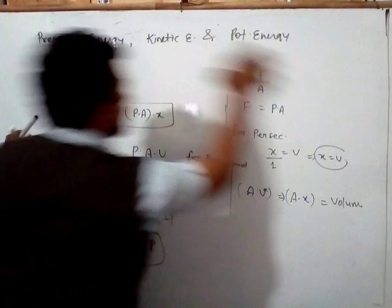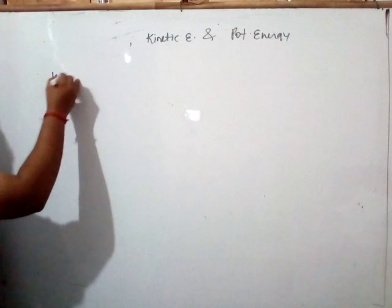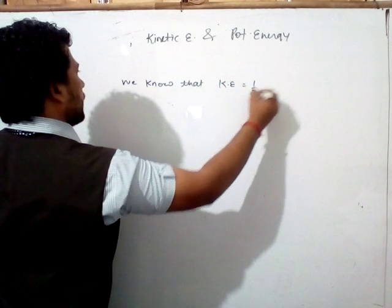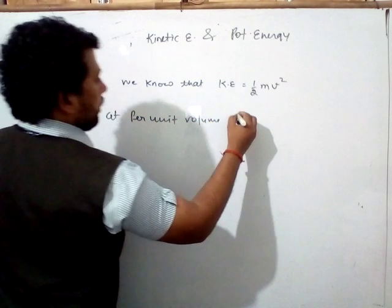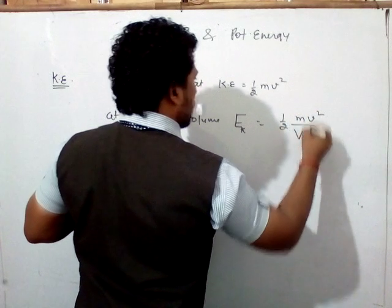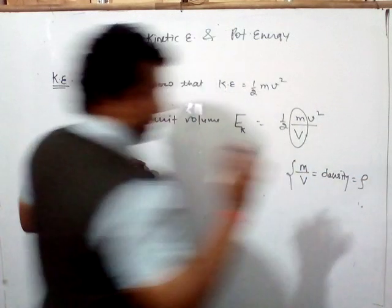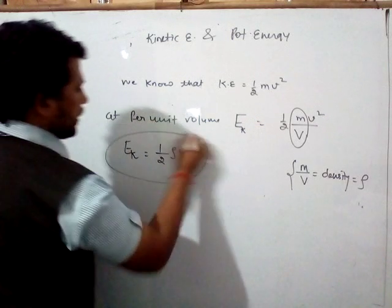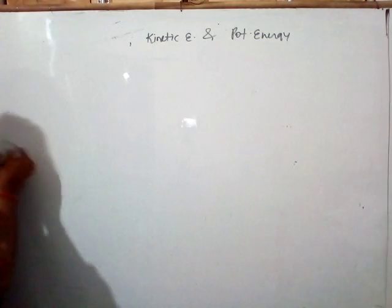Kinetic energy: we know that KE = ½mv². Per unit volume, we divide by volume, and mass upon volume equals density (rho). So kinetic energy per unit volume equals ½ρv².